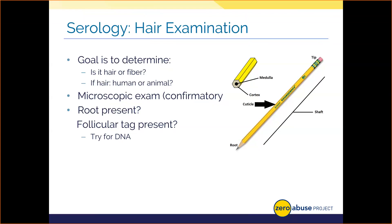We can also examine the root — typically club-like in appearance — and the tip, which in humans might be cleanly cut or razored due to haircuts. Hair and fiber exams are not presumptive; there are definitive features that allow us to determine if something is hair or fiber, and human or non-human. However, I can't tell you who a hair came from unless I get DNA. If we have a root with enough DNA or a follicular tag, we might be able to pull a profile. There is some research on digesting whole human hair to create a DNA profile from fragmented DNA in the shaft itself, but that's for another discussion.